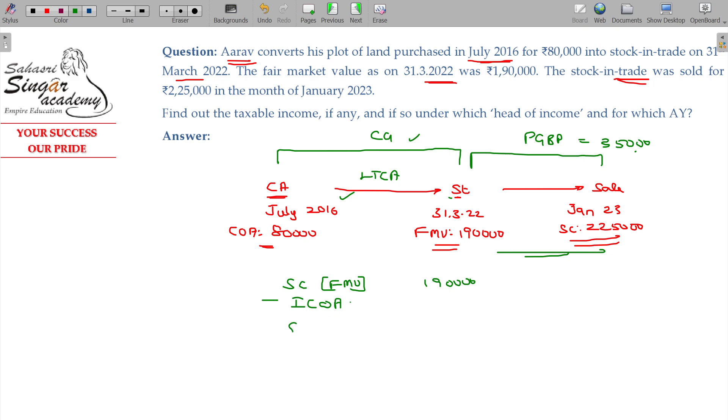For indexation, take Rs. 80,000 multiplied by the cost inflation index. The numerator uses 2021-22 for the conversion date, and indexation is applicable up to the date of conversion, though taxable in the year of sale of stock.